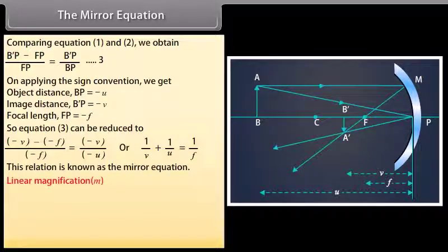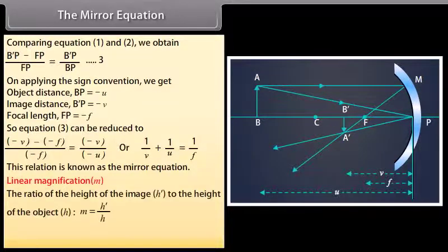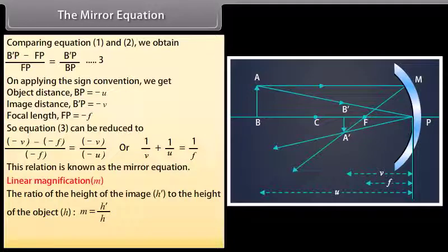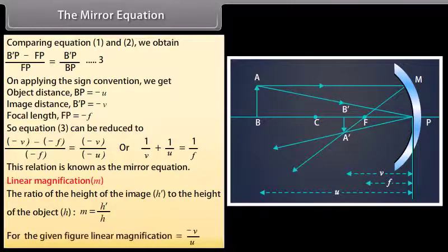Linear magnification M is the ratio of the height of the image H' to the height of the object H. M = H'/H. For the given figure, linear magnification is −v/u.